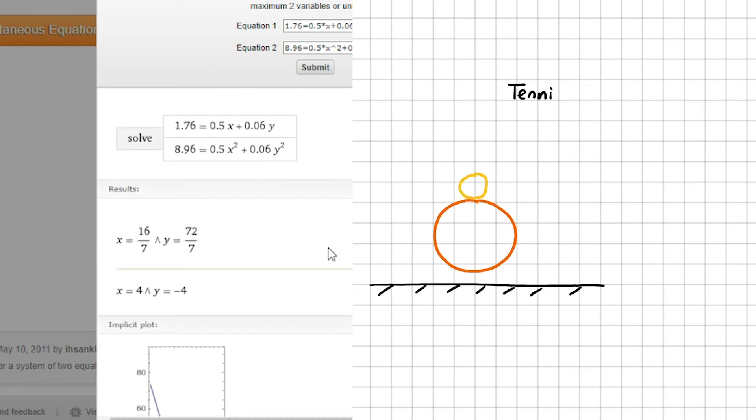Wolfram tells me that there are two possible sets of solutions. The first set tells us that the tennis ball's final velocity is 72 over 7, which is 10.3 meters per second. The second solution says that the tennis ball has negative final velocity. This suggests that it travels downward after the collision. In the experiments that we've seen at the beginning of this video, we saw that the tennis ball shoots upward after the collision. So the solution minus 4 doesn't make any physical sense. We can eliminate this. If the tennis ball's final velocity is 10.3 meters per second, the final velocity of the basketball is 16 divided by 7, which is 2.3 meters per second.